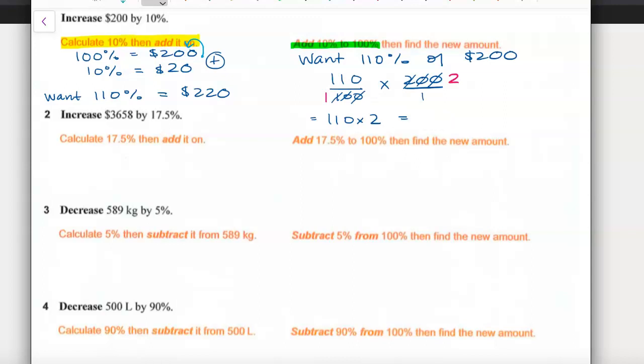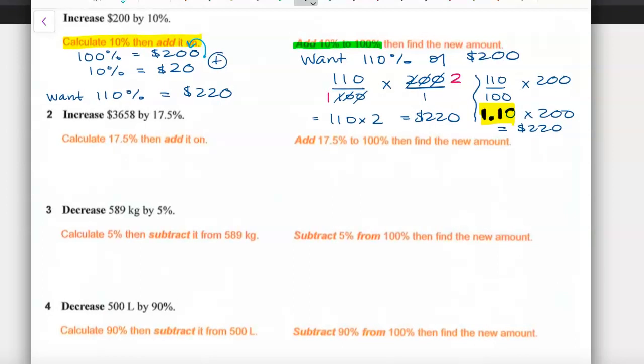Or I can think of in a calculator 110 over 100 times 200 is like 1.10 lots of 200. Checking that on our calculator gives us the 220. I love looking at the decimal 1.10 because this tells me I've got one whole of my value the $200 plus 10% more.